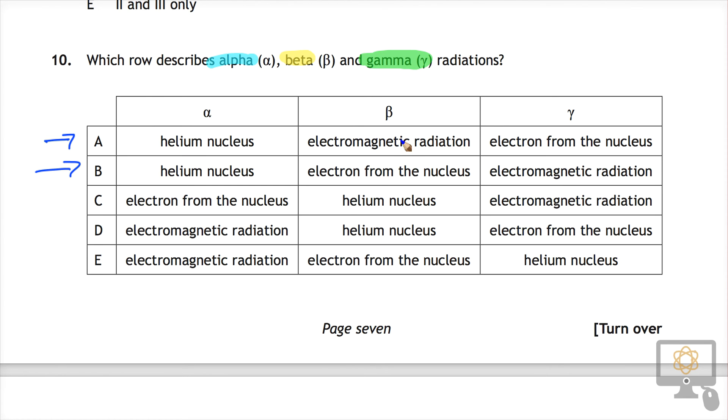Beta is fast-moving electrons and they also come from the nucleus. So that would suggest that E is correct. Anything else?